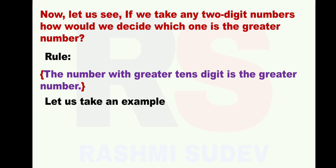Let us take an example: 37 and 52. You can identify even without applying the rule which is the bigger and which is the smaller number. The given numbers are 37 and 52. Which is the smaller number? You will say 37 - yes, 37 is the smaller number. Which is the bigger number? It is 52.